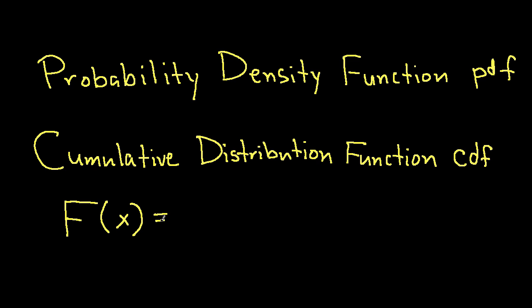This is a capital F of x. F of x is defined as the probability that the random variable x is less than some constant value x.